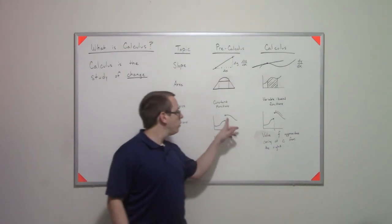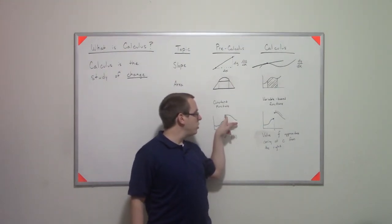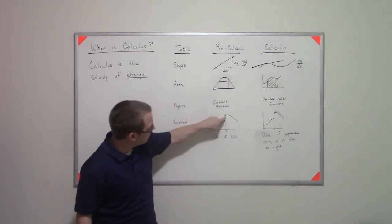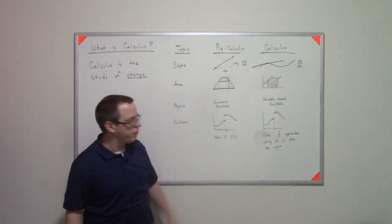But what if I wanted to talk about what it looks like at that jump? How does that, you know, what's that value here? How can I figure that out?